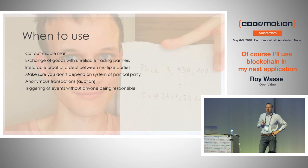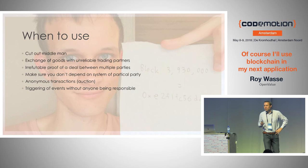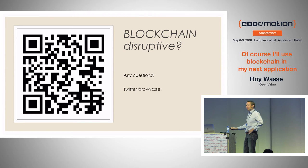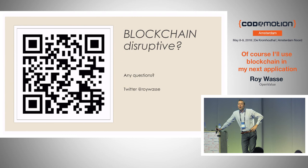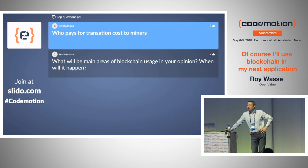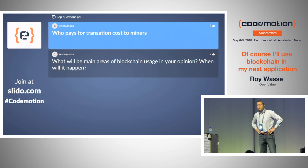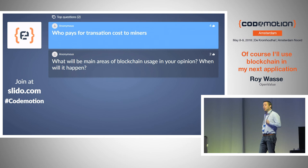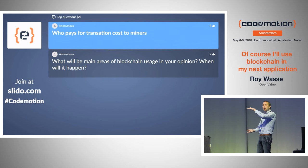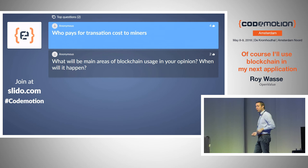I want to leave some time for questions. This is my last slide — and also my Bitcoin address, if you want to transfer any Bitcoins to me. A question from Slido: who pays the transaction costs to the miner? If I do a transaction on the blockchain, as the person initiating the transaction I need to pay a fee, and that fee is collected by the miner. There are 2,500 transactions in a block, and every transaction has a fee associated with it — those fees all go to the miner.